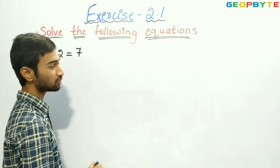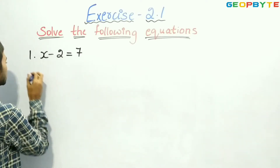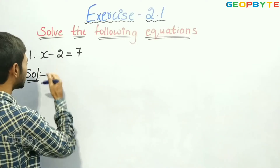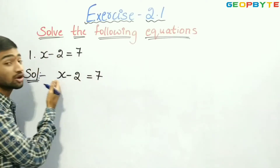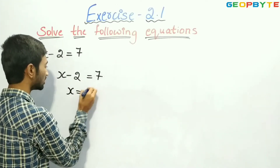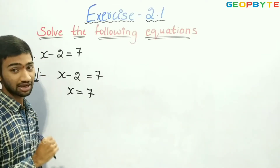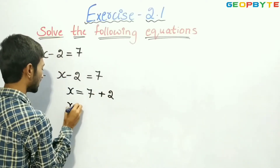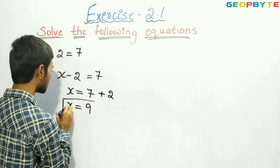Solve the following equations. First question: x minus 2 is equal to 7. Let us write the given equation: x minus 2 is equal to 7. Here, we need to find the value of x. If we transpose minus 2 to the right-hand side, it will become plus 2. So, x is equal to 7 plus 2, which is 9.